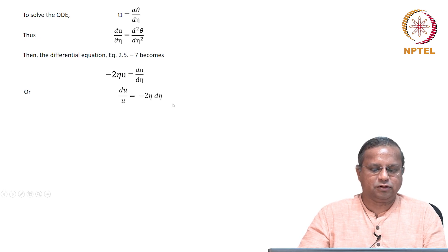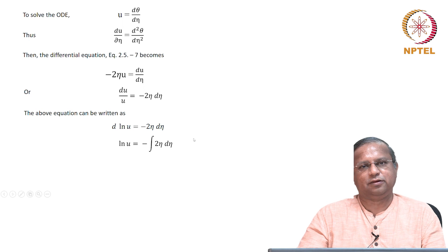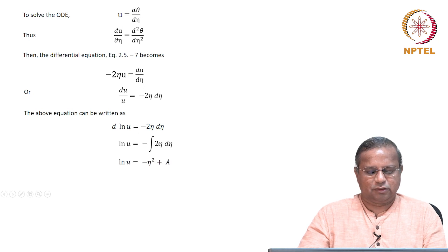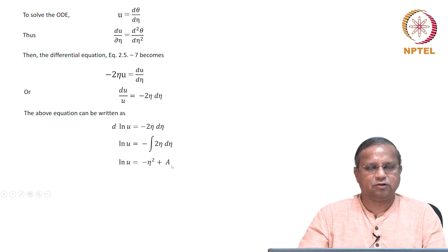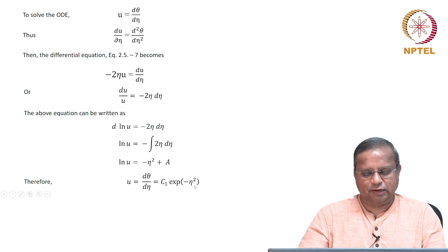You can write this as du/u equals minus 2η dη, and therefore d(ln u) equals minus 2η dη. Integrating, ln u equals minus η², the 2's cancel, plus a constant of integration. Therefore, u — which is dθ/dη — equals c₁ exponential of minus η².